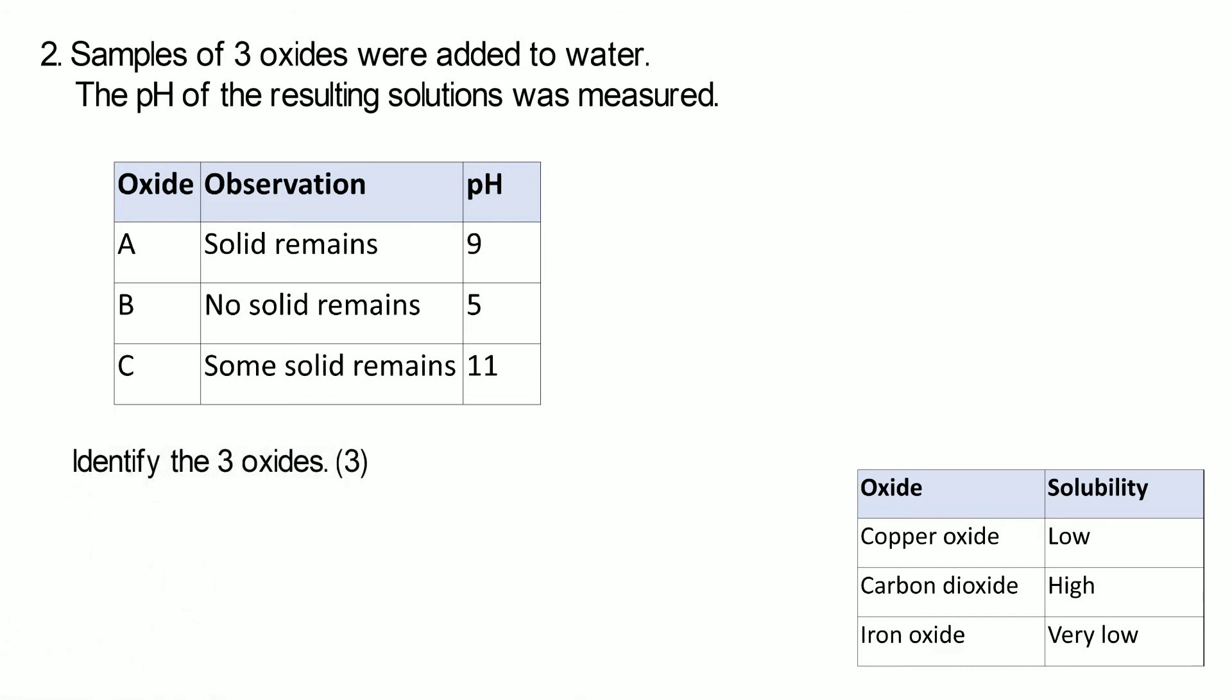We need to identify which of those three are the three oxides in the bottom corner. So what is A? Is it copper oxide, carbon dioxide or iron oxide? And we do that for all three. Pause the video. Use the data in both tables to see if you can figure it out.